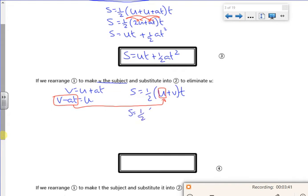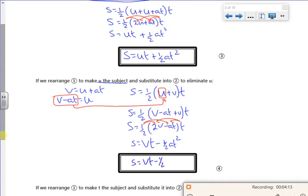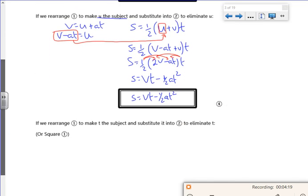So I get S is a half times V minus aT plus V times T. So S is a half times 2V minus aT times T. A half times 2V times T is VT, a half times aT times T is a half aT squared. So S is VT minus a half aT squared. S is displacement, U is the initial velocity, V is the final velocity, T is the time taken, and A is acceleration.